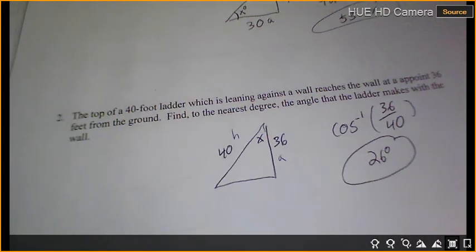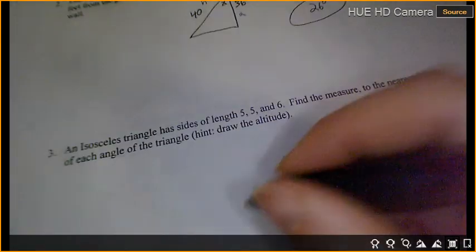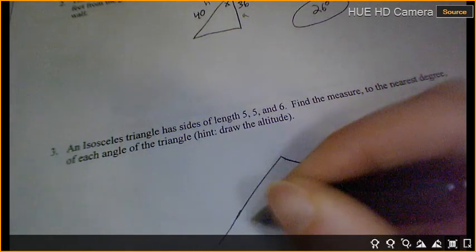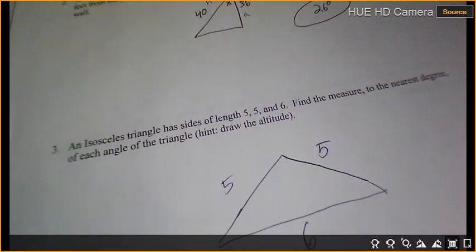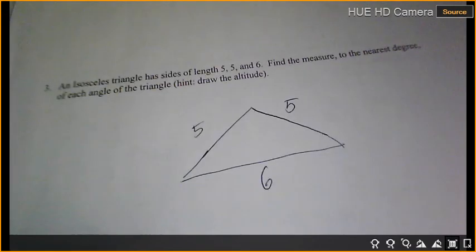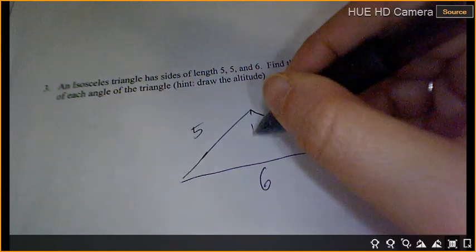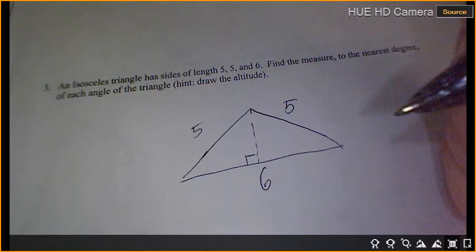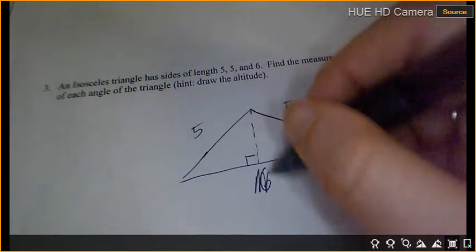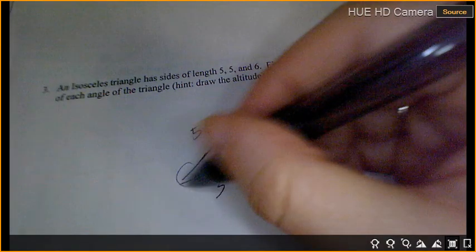Okay. Number 3. An isosceles triangle has the length 5, 5, 6. Find the measure to the nearest degree of each angle of the triangle. Hint. Draw the altitude. What's an altitude? It's the height of the triangle, which would be right here. Okay. If I draw this triangle in half, I know I have a 90 degree triangle. This bottom part is no longer 6. Each side is 3, right?